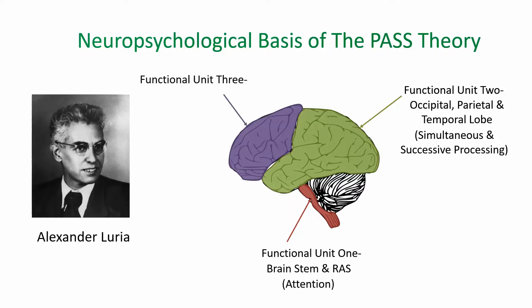The third functional unit is located in the frontal lobes at the front of the brain and is responsible for higher-order thinking like planning and decision making. This unit supports the planning component of the PASS theory.